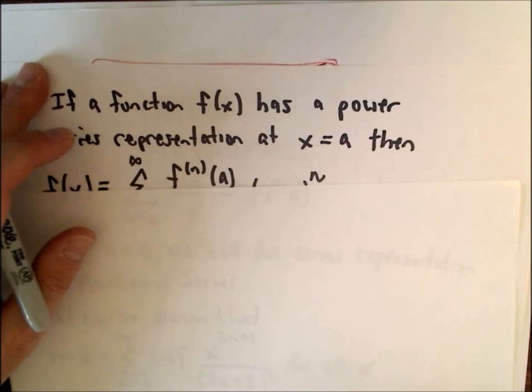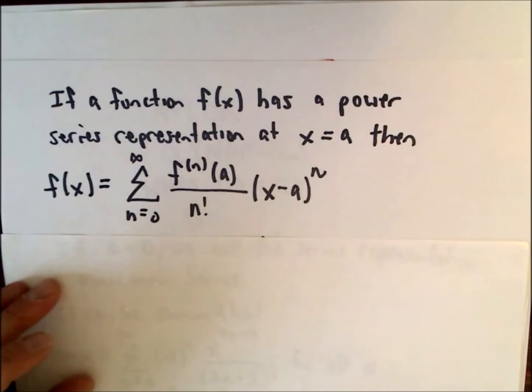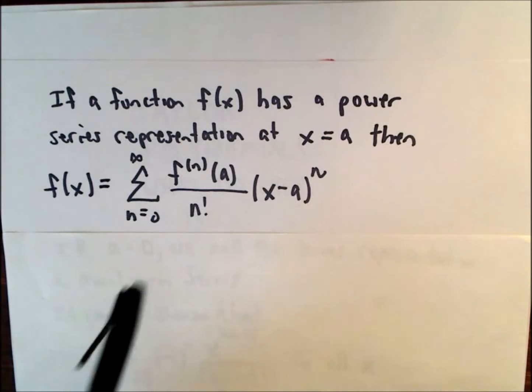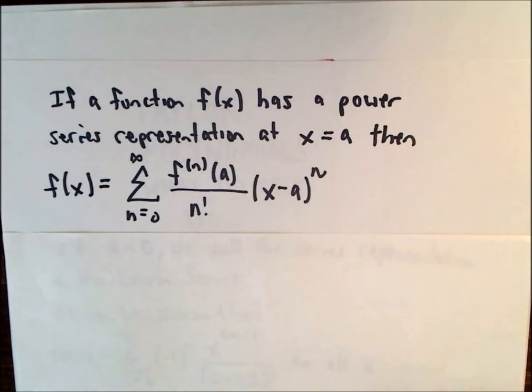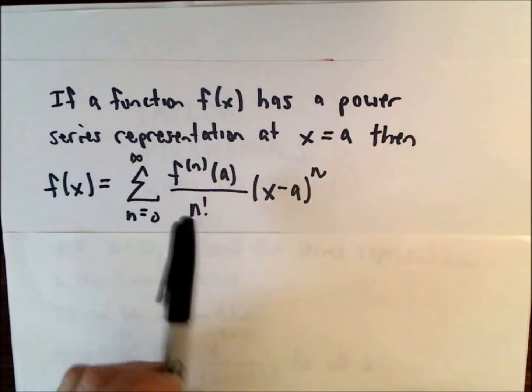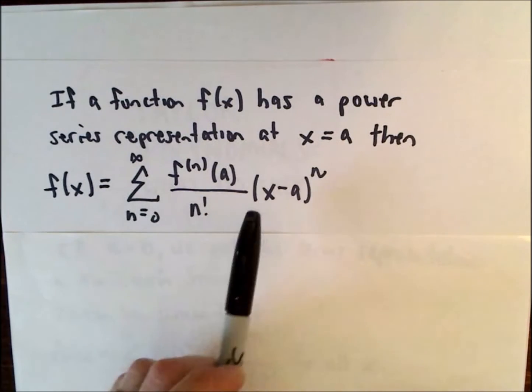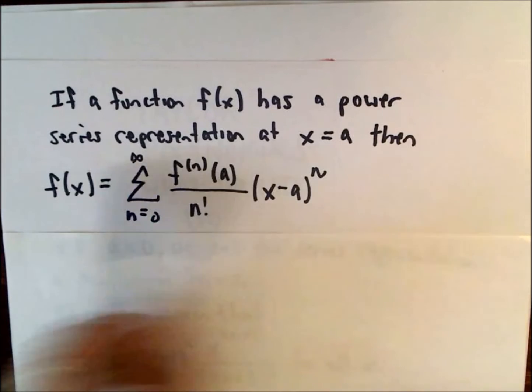The idea is you can use a power series representation for certain functions. You can rewrite that function in terms of an infinite polynomial. So here's the kind of the technical nitty-gritty. If a function f(x) has a power series representation at x equals a, this is the formula.